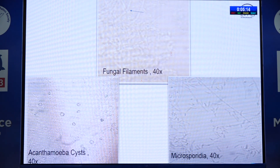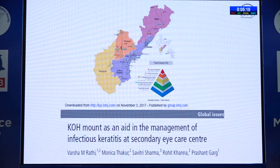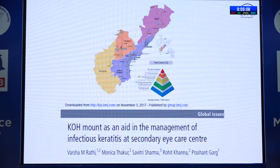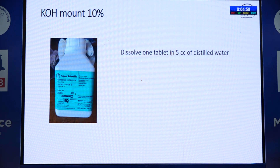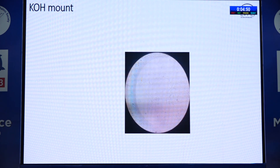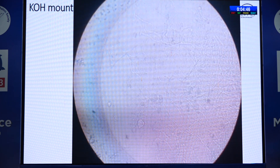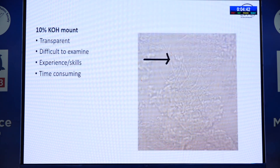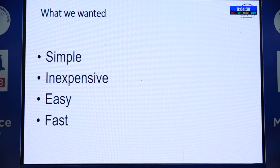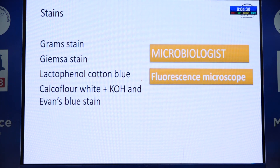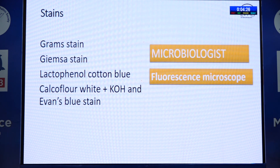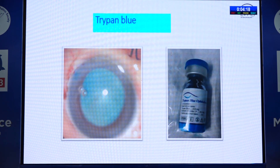A KOH mount is very transparent and difficult for anyone to examine. We wanted something that would highlight organisms — simple, inexpensive, easy, and fast. Gram stain preparation is tedious and requires a microbiologist. Calcofluorite white with KOH requires a fluorescence microscope. That is when we thought of using trypan blue — which every cataract surgeon already has. Trypan blue is also used to stain fungi in plants.